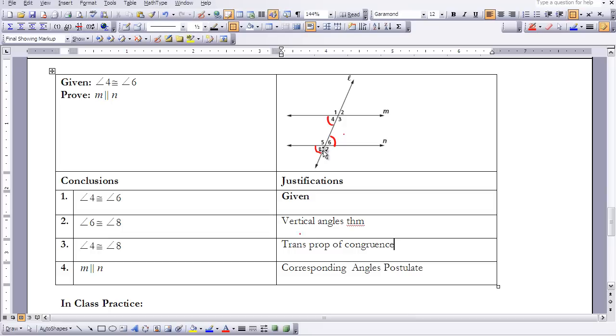And then if you look at four and eight here, those are corresponding angles. And if those angles are equal, then we know our lines are parallel. So our corresponding angles postulate justifies our final statement that M is parallel to N.